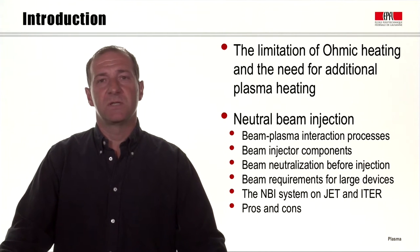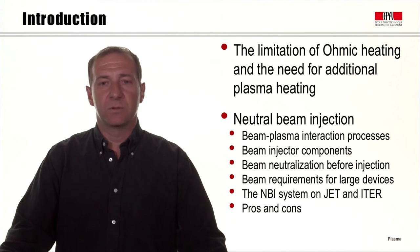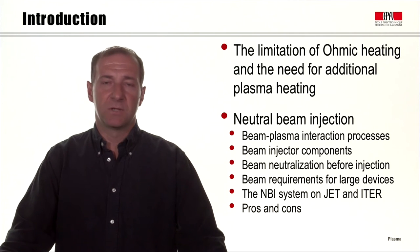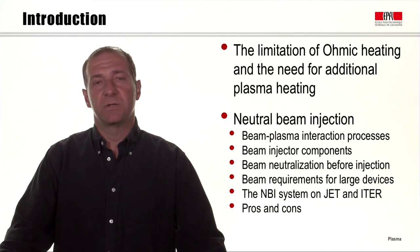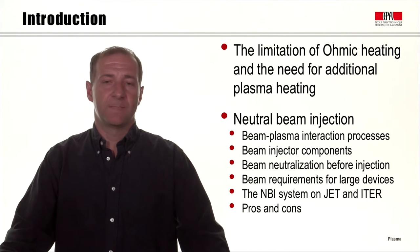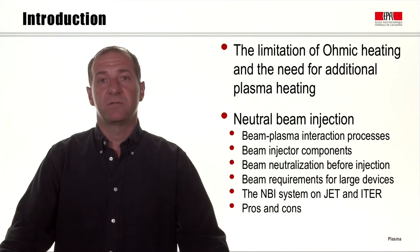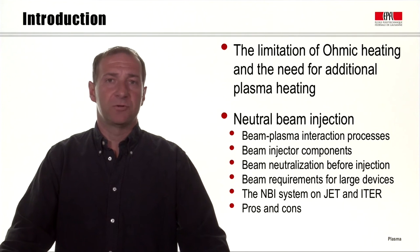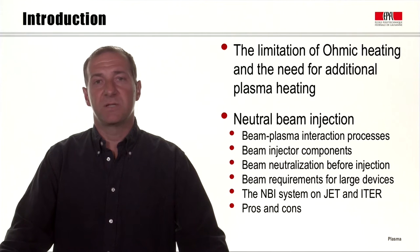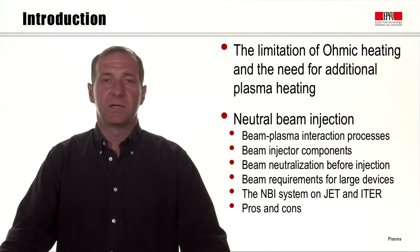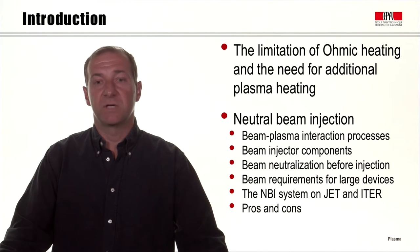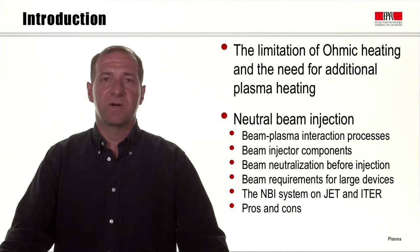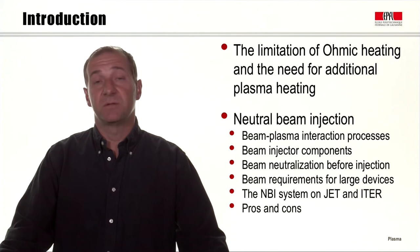We will then focus on the first of the systems we will consider for a reactor: the neutral beam injection. We will explore the processes that take place as the beam is injected into the plasma, the components needed for the beam injection system, the neutralization of the beam before it is injected into the tokamak plasma, and the requirements the beam needs to satisfy in order to be usable on large devices such as the ITER tokamak. We will illustrate the NBI system operational on JET and discuss the design of the NBI system for ITER, including its advantages and disadvantages.